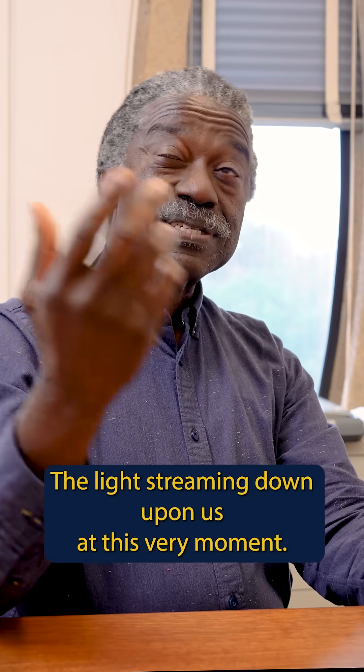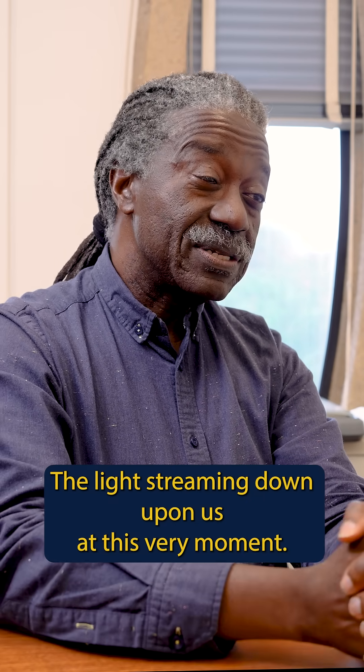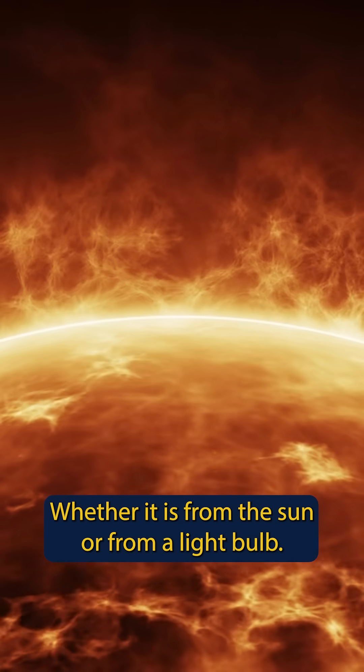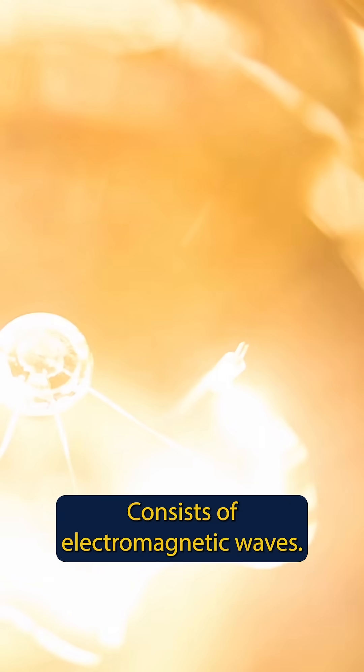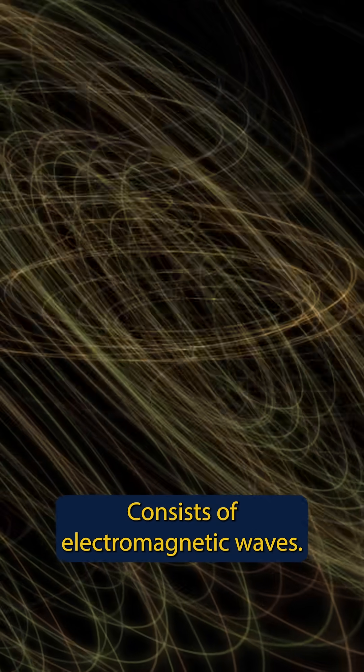The light streaming down upon us at this very moment, whether it is from the sun or from a light bulb, consists of electromagnetic waves.